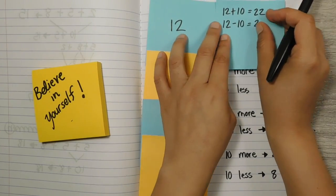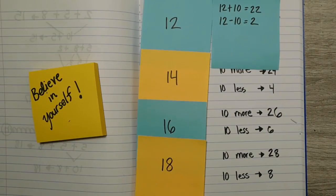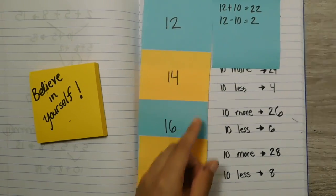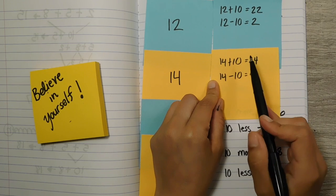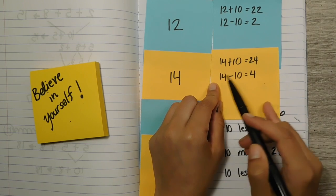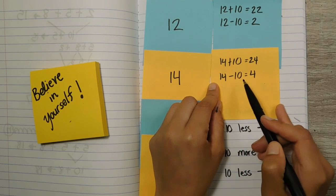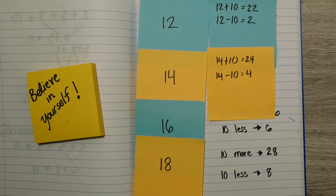Did you do that? Great. If you did this one, you might have done something like this. Where 14 plus 10 equals 24, and then 14 take away 10 equals 4. Are you ready to do the next ones together if you didn't get to them?